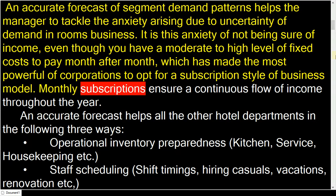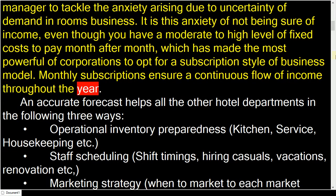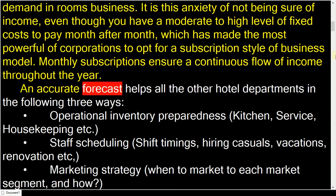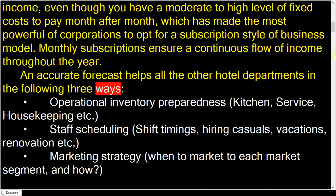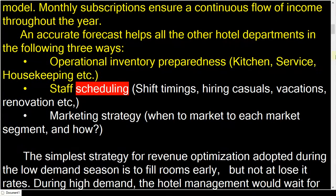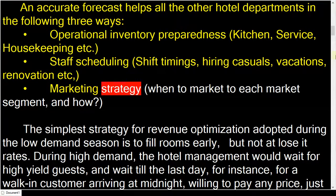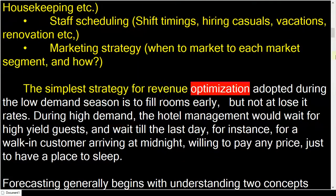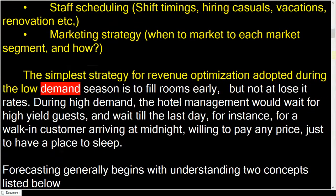Monthly subscriptions ensure a continuous flow of income throughout the year. An accurate forecast helps all the other hotel departments in three ways: Operational Inventory Preparedness, Staff Scheduling, and Marketing Strategy. The simplest strategy for revenue optimization adopted during the low-demand season is to fill rooms early, but not at lose-it rates.